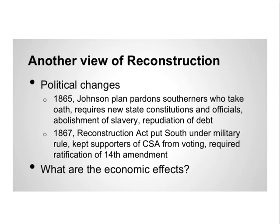We've already talked a little bit about some of the political changes that were taking place in this country as part of Reconstruction. This lecture is going to give you a little bit of a different view, but quickly just to review. We talked about presidential reconstruction — in 1865, then-president and former Vice President Andrew Johnson created a plan that would have pardoned Southerners who took an oath of allegiance to the United States. This was actually more lenient than Lincoln's plan.